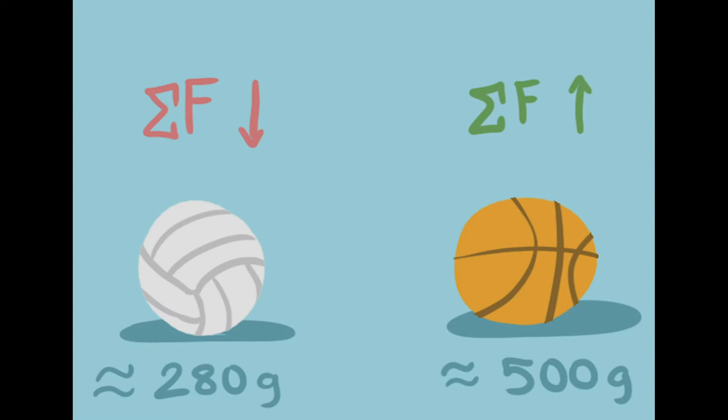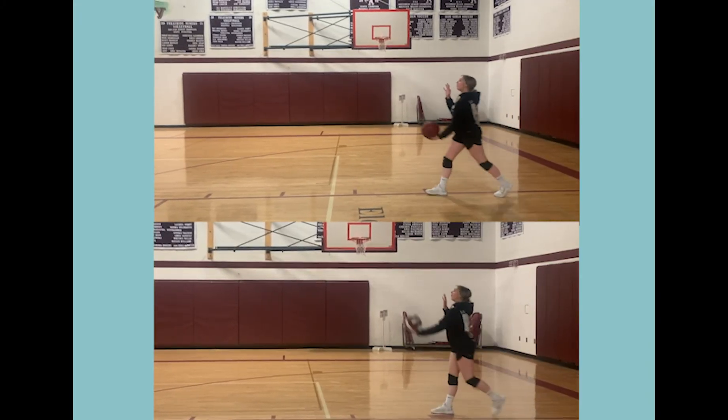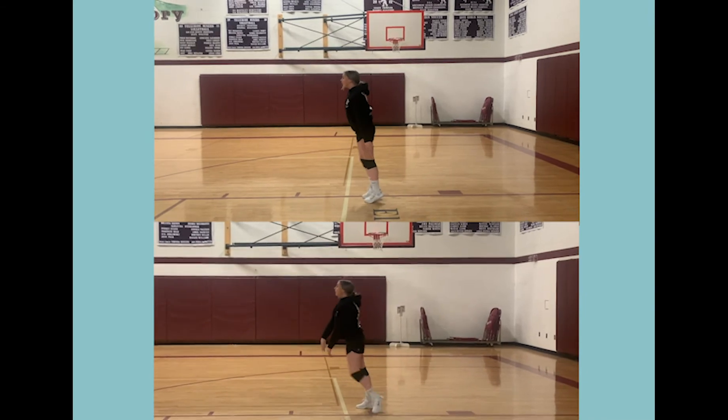An object with a smaller mass requires less force to accelerate, and an object with a greater mass takes more force to accelerate. Therefore, with our force and time remaining constant, our volleyball will travel faster, because it has a lighter mass.